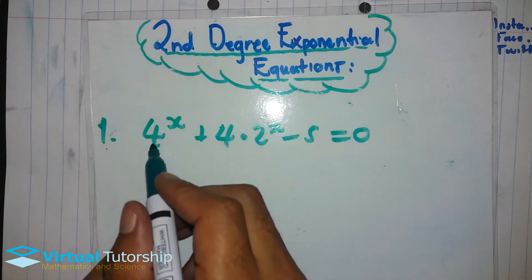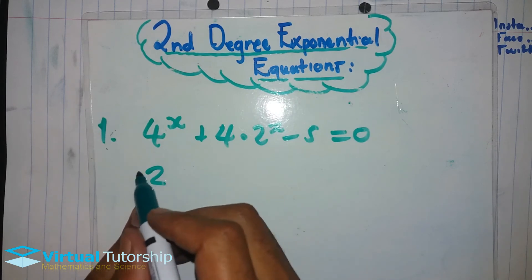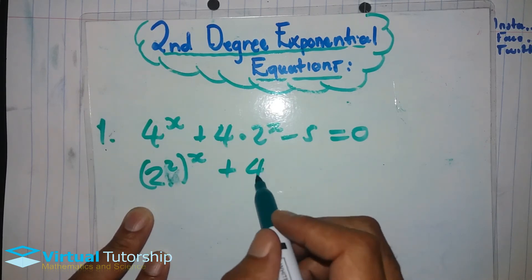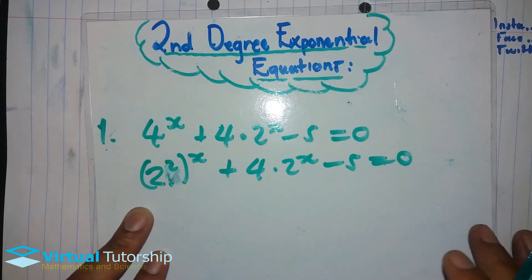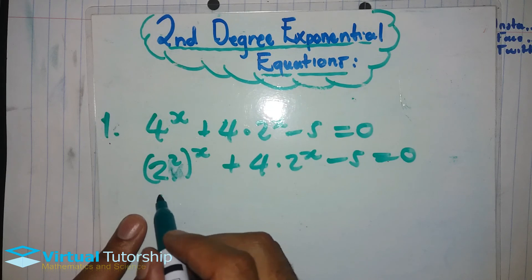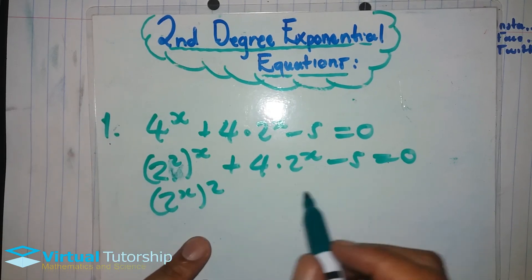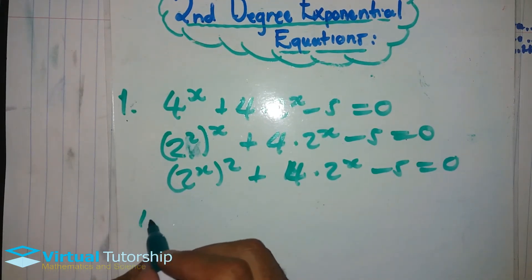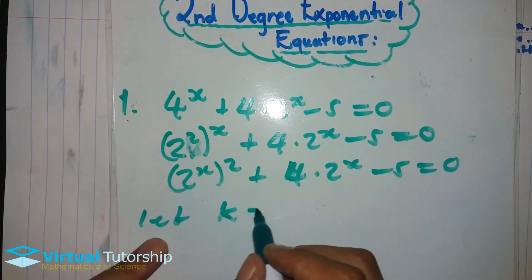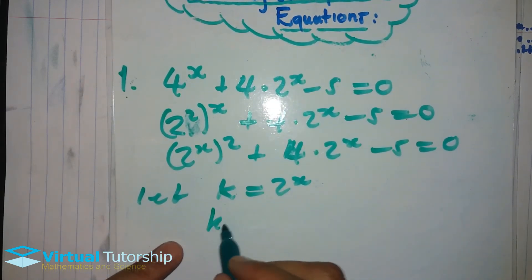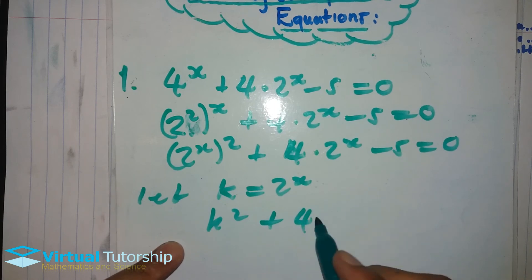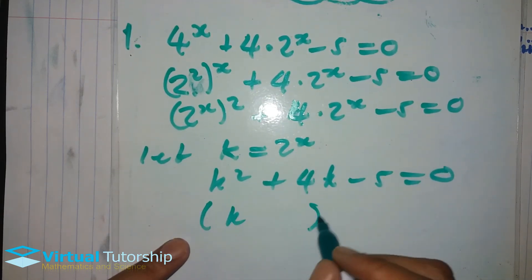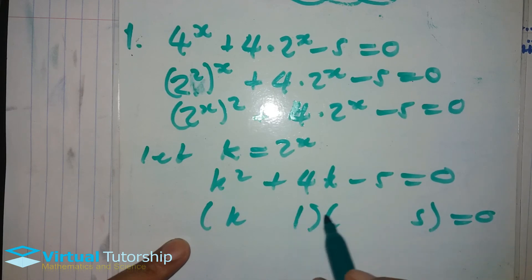Okay, now: we change 4 to 2 exponent 2, all raised to exponent x, plus — remember — 2 exponent x minus 5 is equal to zero. So: (2 exponent 2) raised to exponent x plus 4 times 2 exponent x minus 5 is equal to zero.